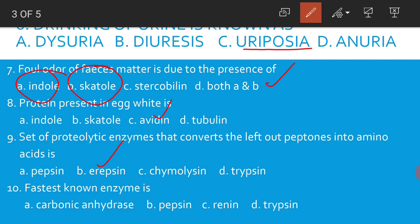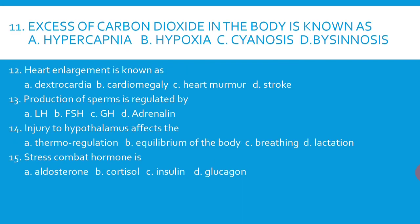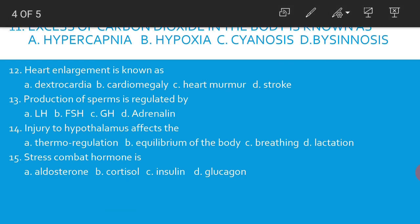Fastest known enzyme is carbonic anhydrase — this is a very important bit. Excess of carbon dioxide in the body is known as hypercapnia.